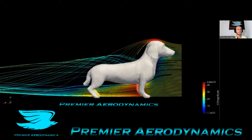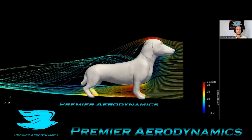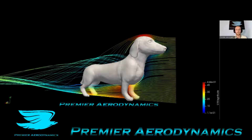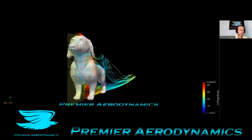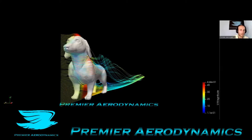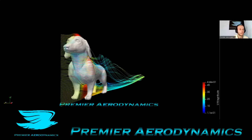The flow comes over and sort of reattaches a little bit again, and the streamlines are colored with the U magnitude. Just there you can see, between the dog's ear and the shoulder, that's where the vortex rolls up — so there's fluid being funneled into that region. That's pretty cool.